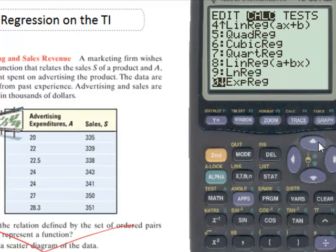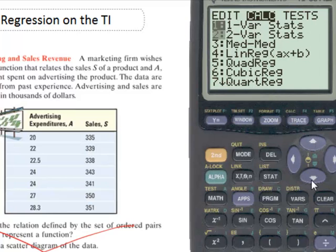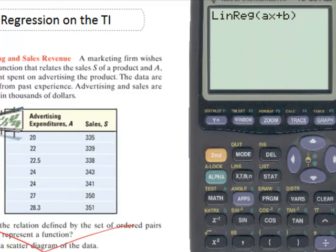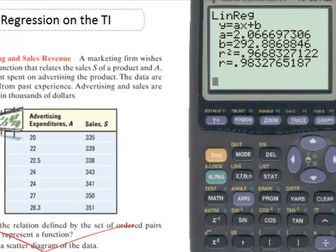Now there is another one down here, A plus BX. It's the same thing. It's just A and B swap roles. I like the AX plus B because that matches with the MX plus B, as in B being the Y intercept. So enter, hit enter again, and there you go.